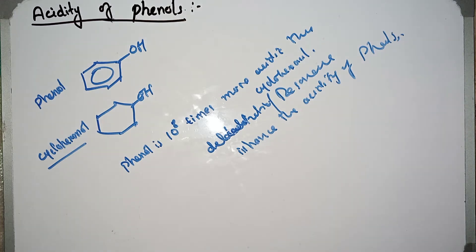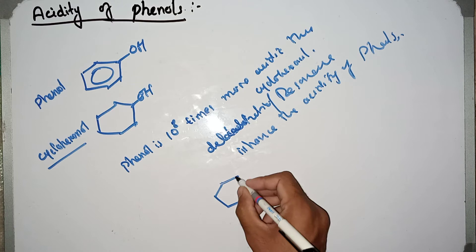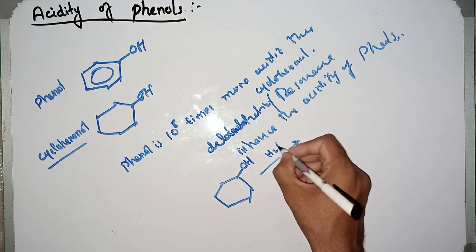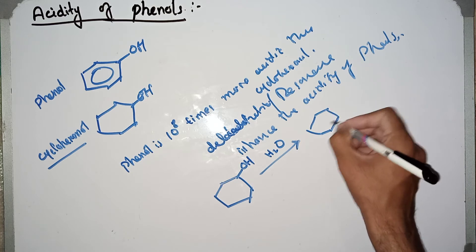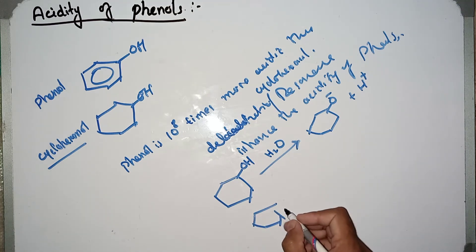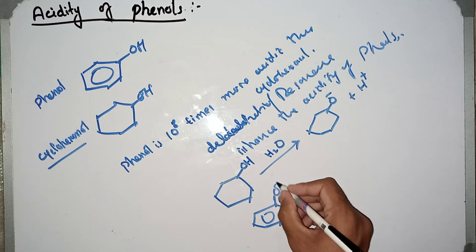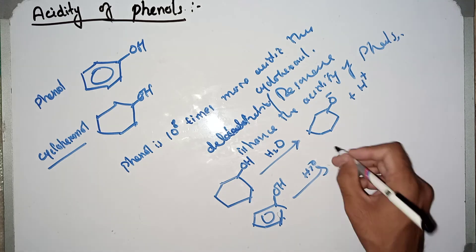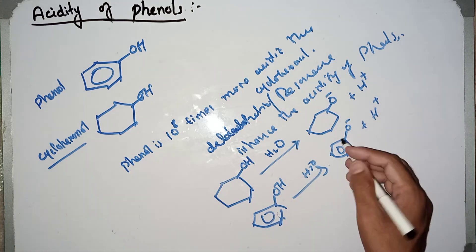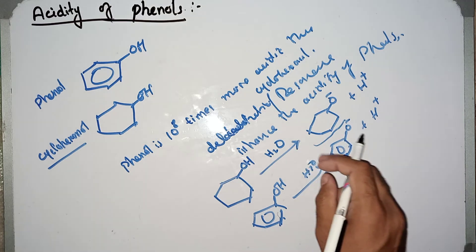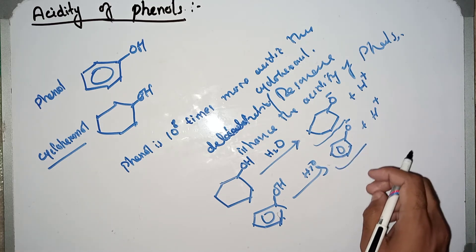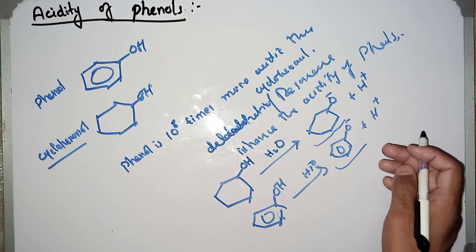Let's start the topic. When you add cyclohexanol in aqueous solution, it will generate O-negative plus H-positive. When you add phenol in aqueous solution, it generates the phenoxide ion — O-negative plus H-positive. So in both cases hydrogen ion is produced, but in one case we get cyclohexoxide ion and in the other case we get the phenoxide ion.